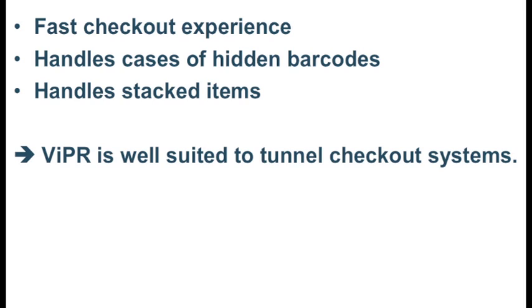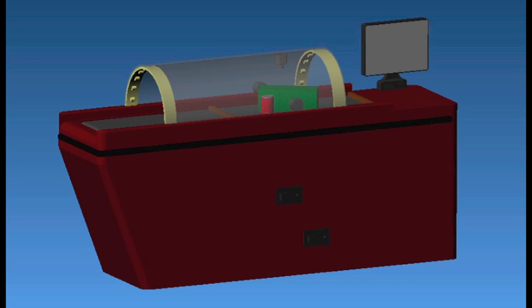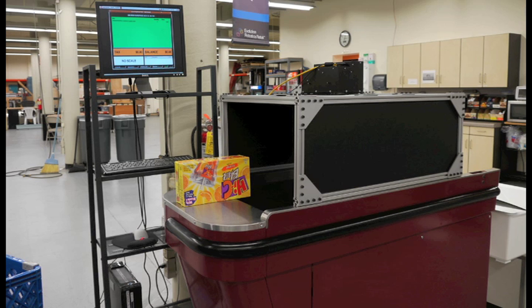Tunnel systems with Viper technology provide a fast checkout experience for customers. It handles the cases of hidden barcodes, handles stacked items, and multiple items at the same time. And therefore, Viper is well suited to use in tunnel checkout systems. Viper can be incorporated into new tunnel designs, as well as being retrofitted onto existing belted self-checkout lanes, as is the case in our demo system.